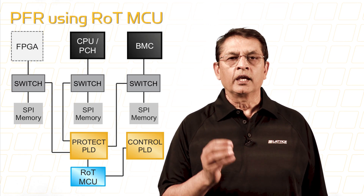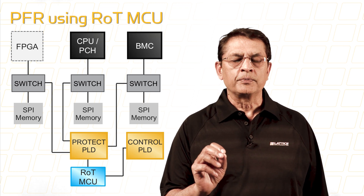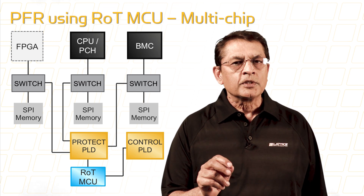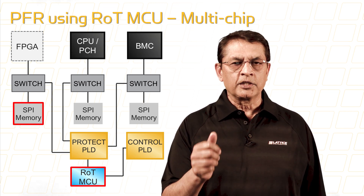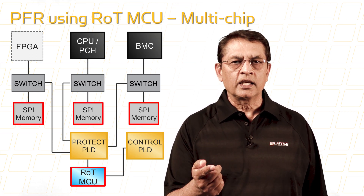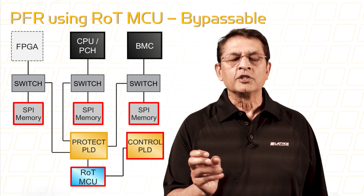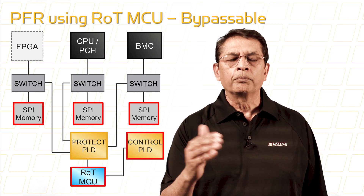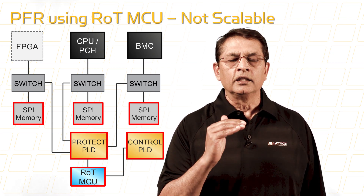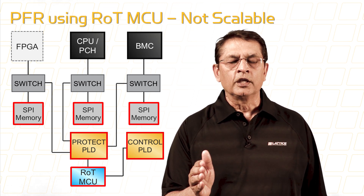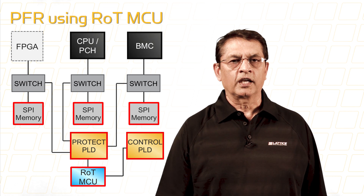There are two ways to implement NIST compliant PFR. One is using a route of trust device based on microcontroller, or ROTMCU. In a board, ROTMCU comes on first, measures the spy memory, detects the errors, and recovers from it. After that, the control PLD is used to turn the board power on. And then, the protect PLD in conjunction with ROTCPU is used to protect the PLDs from further attacks.